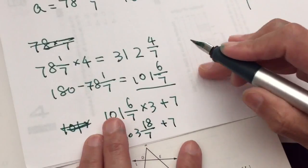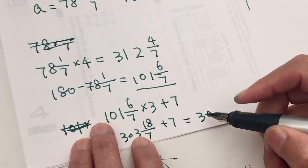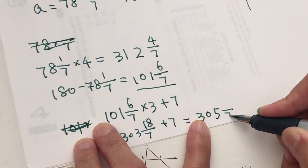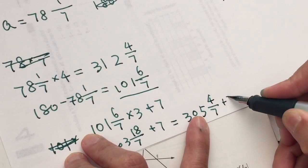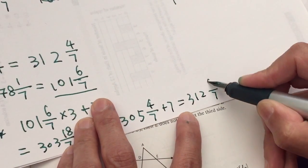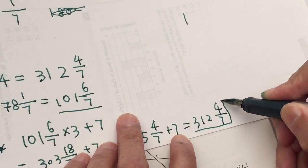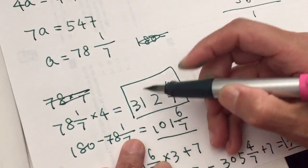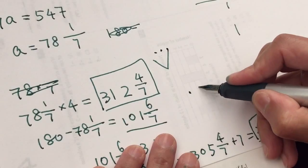Times 3 plus 7 equals, 3 times 7 is 21, 3 times 6 is 18, 303 plus 7 equals 312 and 4/7. Let's see the magic number. And this magic number, we are right. We are just so good. I love it.